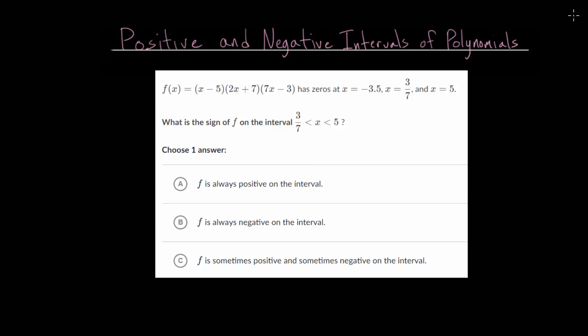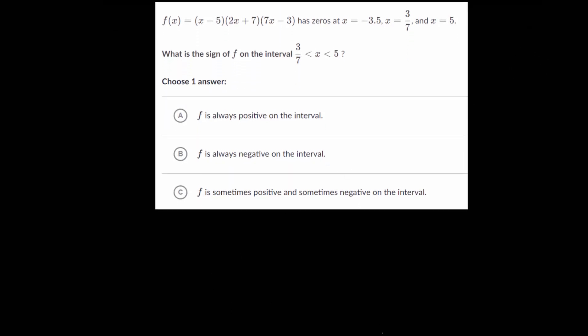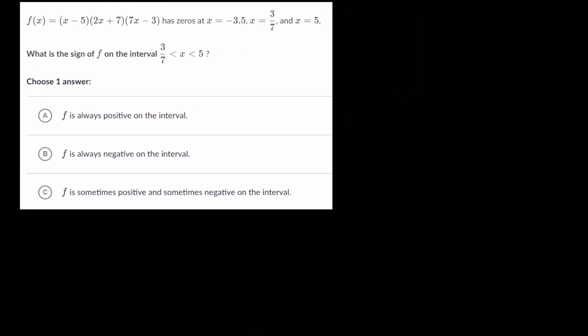To better understand this let's look at a specific example problem. We have some function and this function has zeros at three different points and we need to know what is the sign of the function. Is it positive or negative on the interval from 3/7 to 5? So x is going to be between these two different x values.